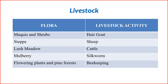The table presents a correlation between various types of flora and corresponding livestock activities. Maquis and shrubs — livestock activity: hair goat. Hair goats thrive in areas abundant with maquis and shrubs, making these regions ideal for their grazing and sustenance. Steppe — livestock activity: sheep. The vast expanses of the steppe provide an excellent environment for sheep, allowing them to graze and flourish in these grassy landscapes. Lush meadow — livestock activity: cattle. Cattle find optimal conditions in lush meadows, where the abundance of grass and vegetation supports their grazing habits and overall well-being. Mulberry — livestock activity: silkworm. Mulberry trees are crucial for silkworms, as they feed on the leaves of these trees during the crucial stages of their life cycle, contributing to the silk production process.